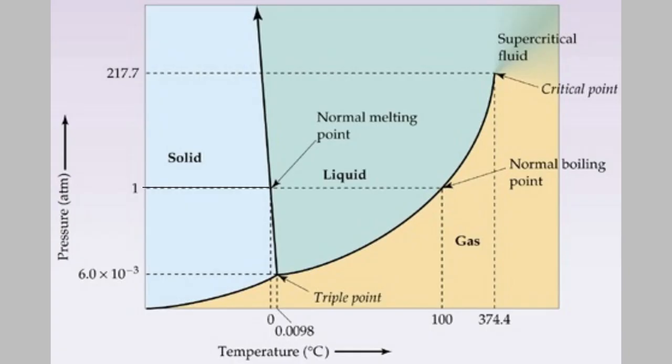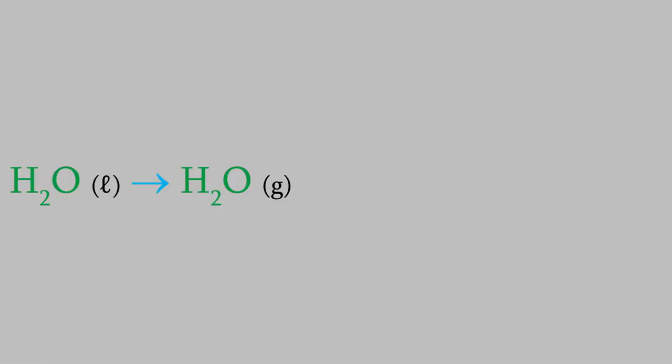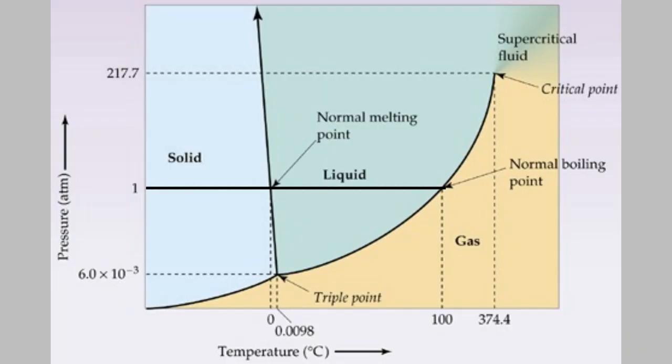Anyway, back to the phase diagram. If we continue to go to the right, the temperature increases again until we get to the next phase change. At this point, the water is vaporized, and it becomes a gas. As you already know, this happens at the boiling point of water, which is 100 degrees Celsius. Once again, we can write this phase change like a chemical reaction, and this one has an enthalpy of 40.67 kJ per mol. We can continue to increase the temperature of our water vapor, which means we'll keep going to the right on the phase diagram.